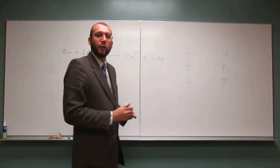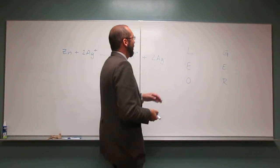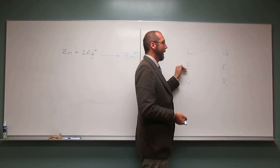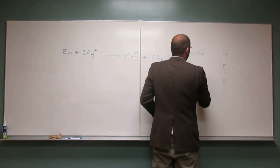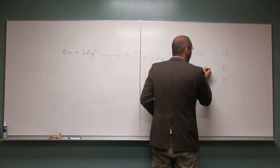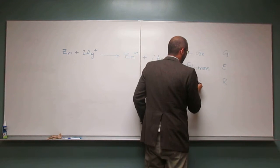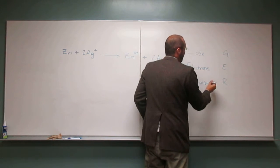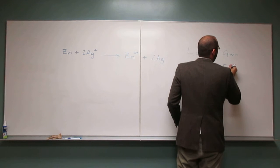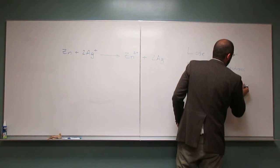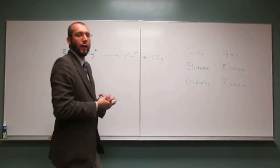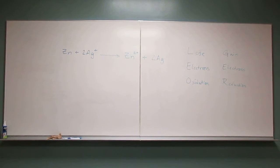Do you think you can remember that — LEO the lion says GR? What does this mean? It means lose electrons, that's oxidation. You remember this from gen chem, right? OIL RIG is another one — oxidation is loss. And gain electrons is reduction. In Texas, I think people use OIL RIG much more; it's kind of culturally more significant than LEO the lion says GR. Anyway, electrons are negatively charged.